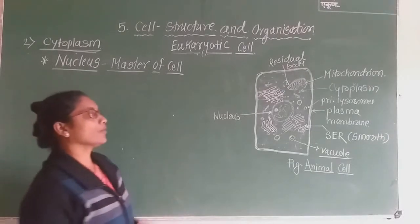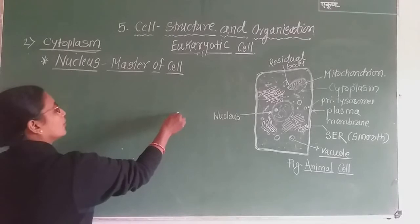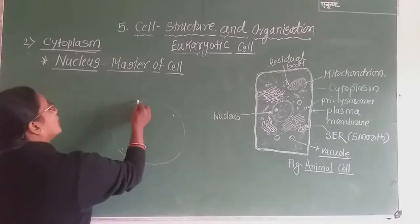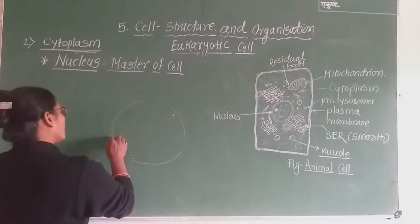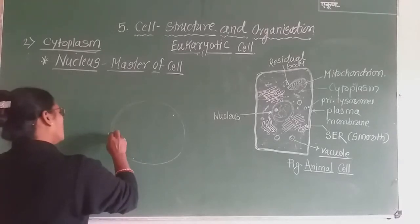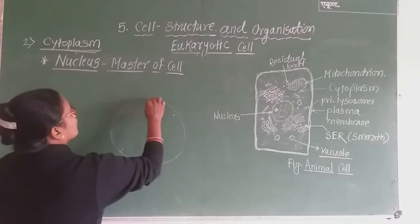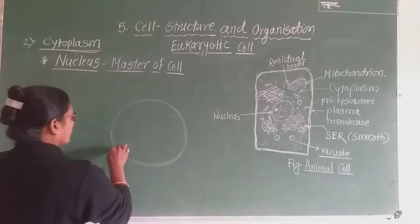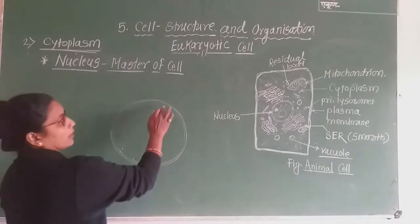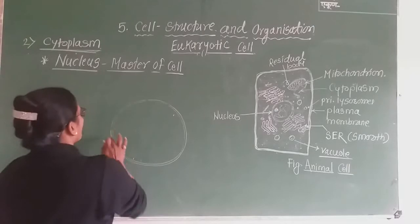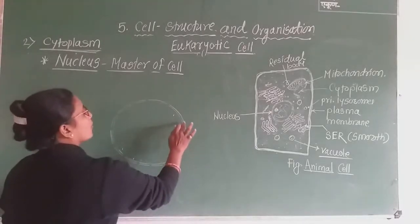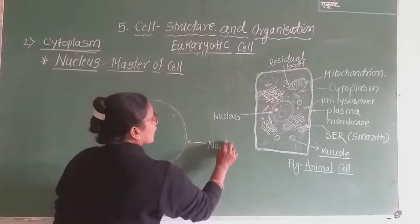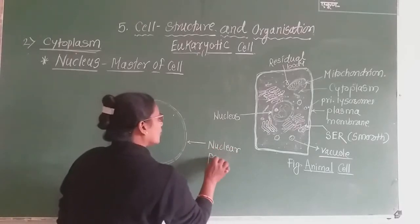When we study about the nucleus, we find that the eukaryotic nucleus consists of a double-layered nuclear membrane. This membrane is double layered. Now this nuclear membrane is non-continuous — at certain regions there is a presence of gaps. These gaps are called as nuclear pores.